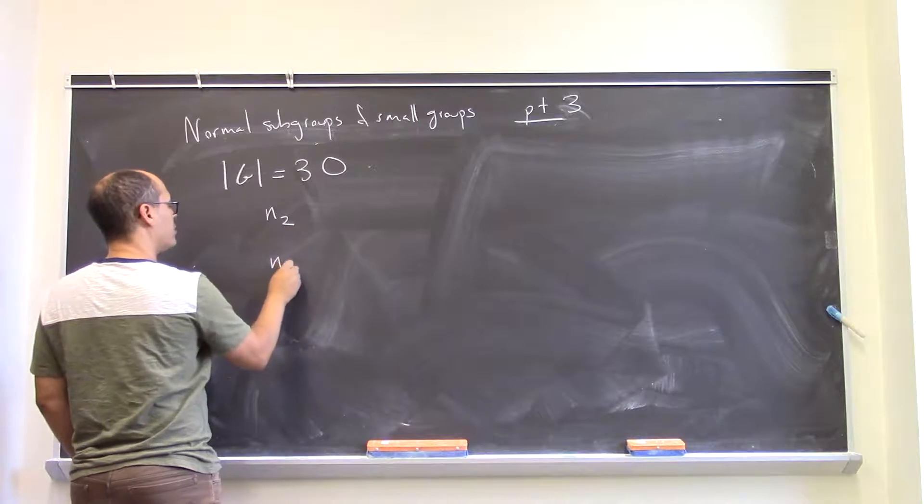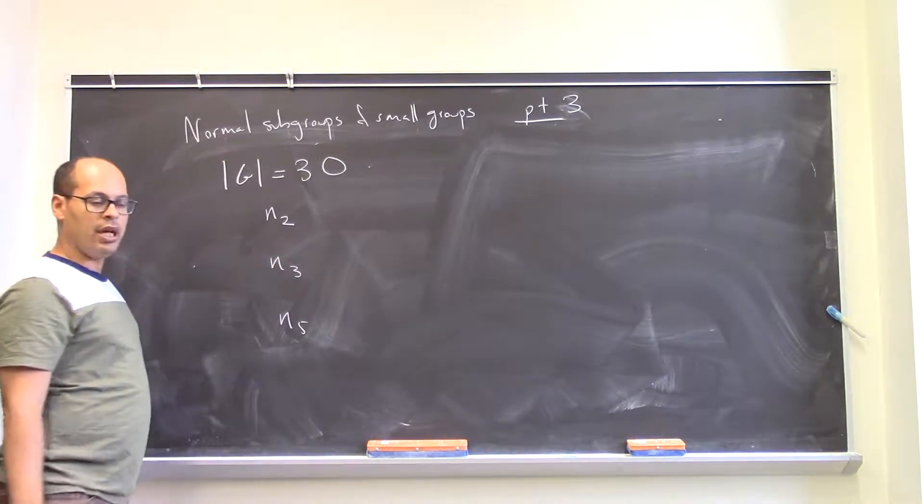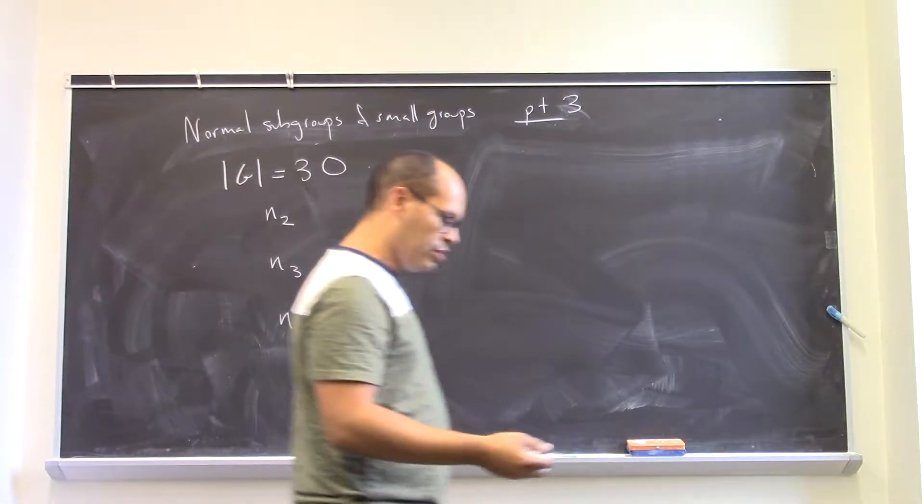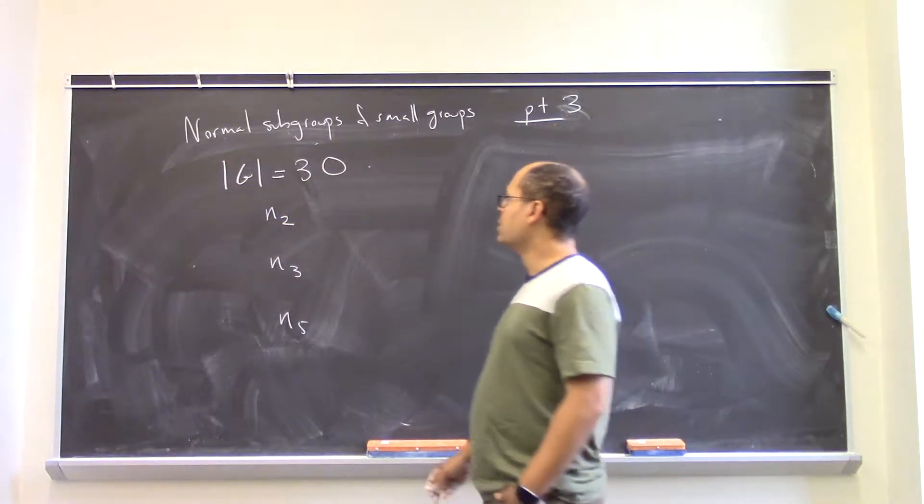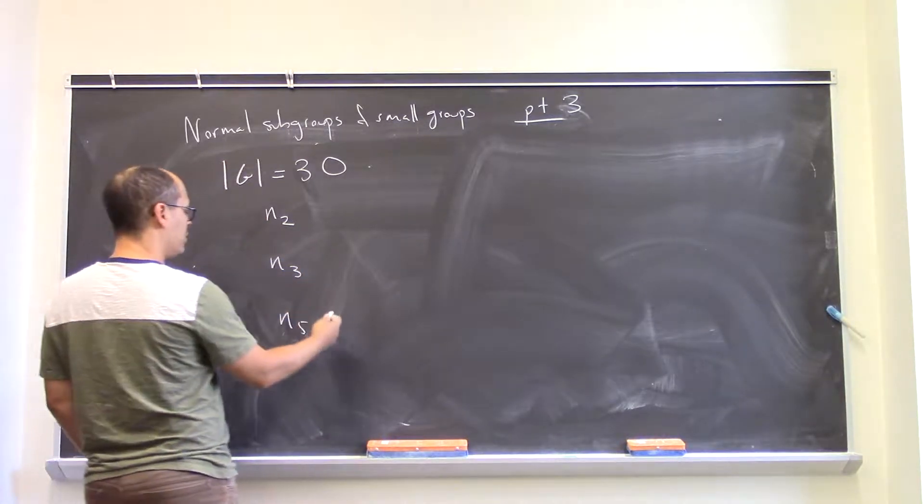I can look at N2, N3, and N5. So the Sylow subgroups N2 are subgroups of order 2, look at subgroups of order 3 or subgroups of order 5.